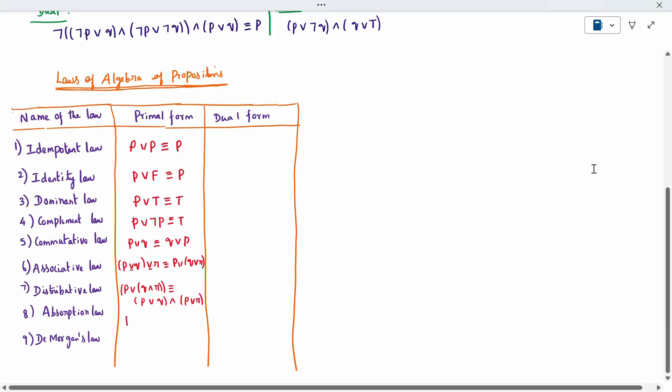Absorption law, when you have p disjunction (p conjunction q), which is equivalent to same p. It is absorption law. De Morgan's law, always is negation. Negation of (p disjunction q) is equivalent to (negation p) conjunction (negation q). Completed.